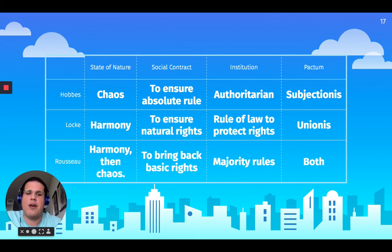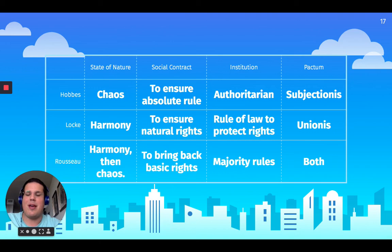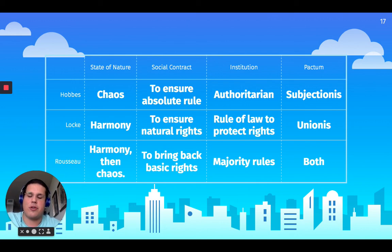In terms of the pactum: for Hobbes, it's going to be subjectionis; for Locke, it's going to be unionis; and for Rousseau, it's going to be a little bit of both, because the majority is going to be kind of authoritarian to the rest of the population. So this is a major flaw in democracy as well.